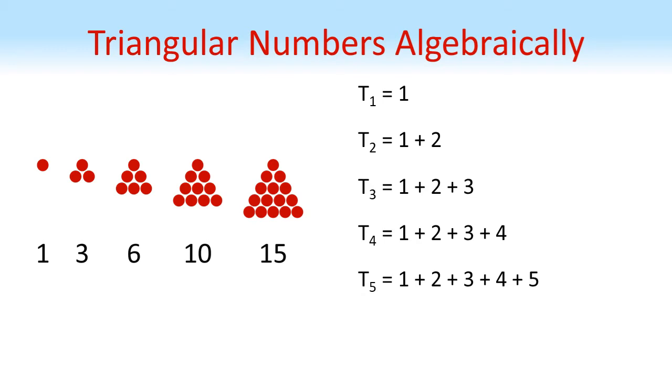We can see quite easily that these are all the sums of whole numbers from 1 up to the number that's equal to the term position of our triangular number. So the nth triangular number tn must be the sum of all the whole numbers from 1 up to n.